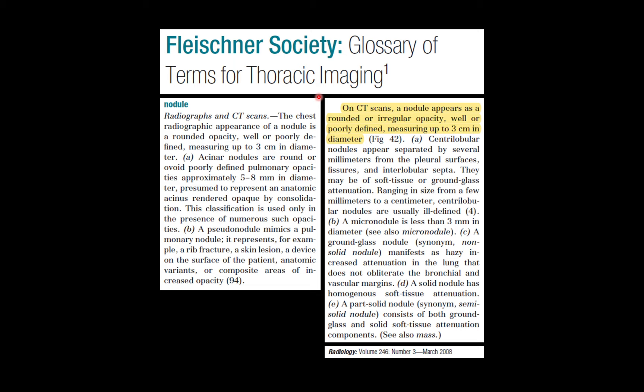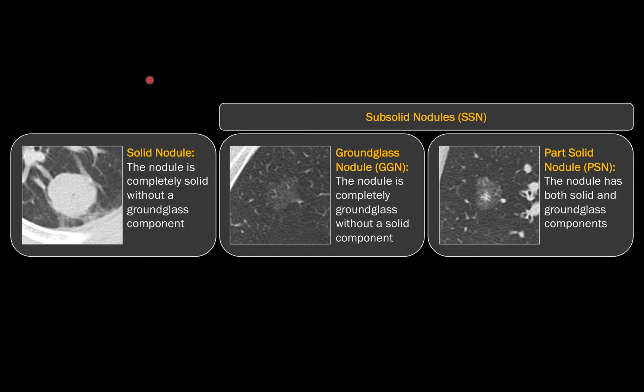It's important to remember what a nodule is. From the Fleischner Glossary, a nodule is a round or irregular opacity that measures less than 3 centimeters. When we see nodules on CT, we look at multiple characteristics like size, shape, and borders. Another important characteristic is the attenuation.